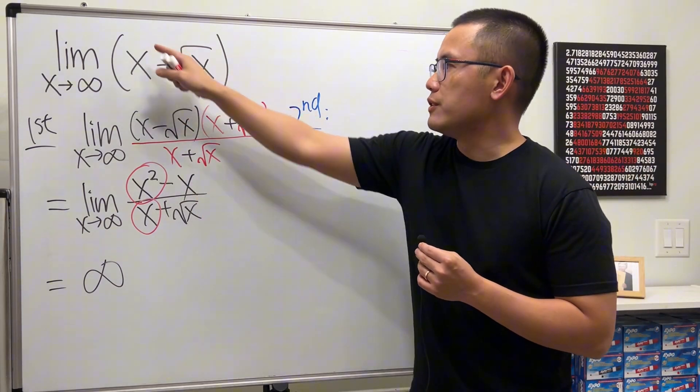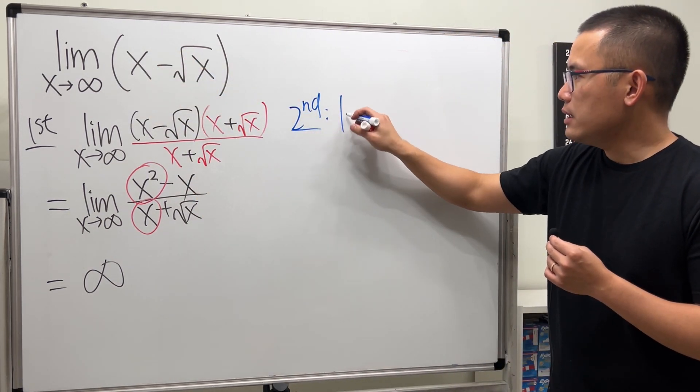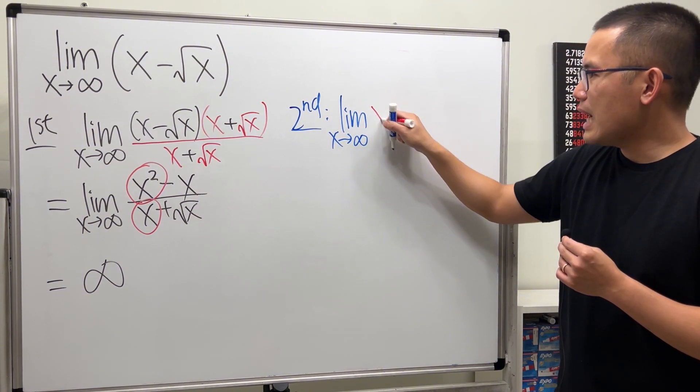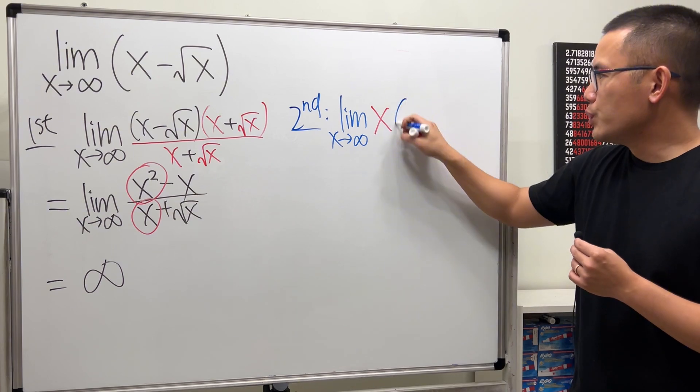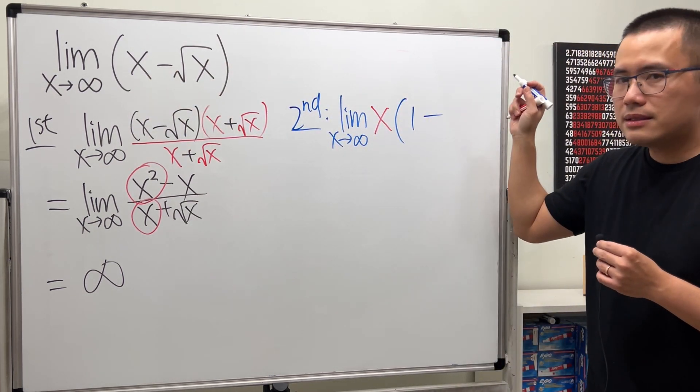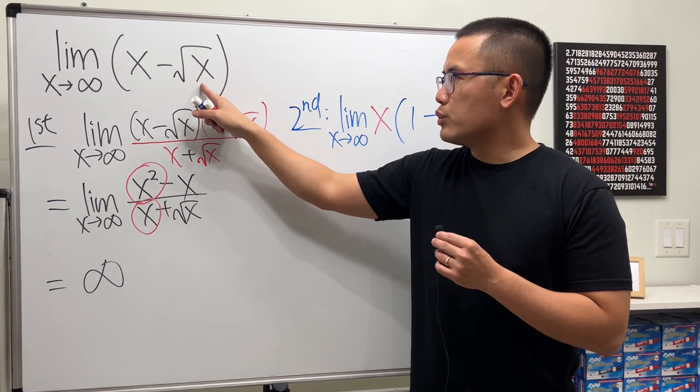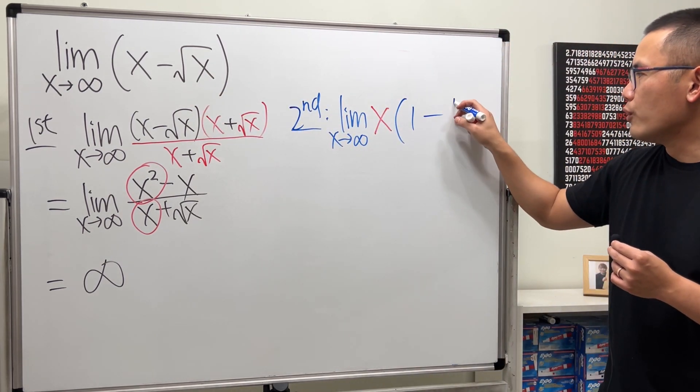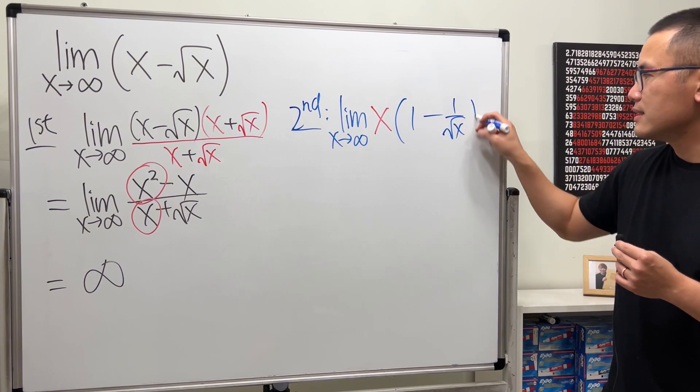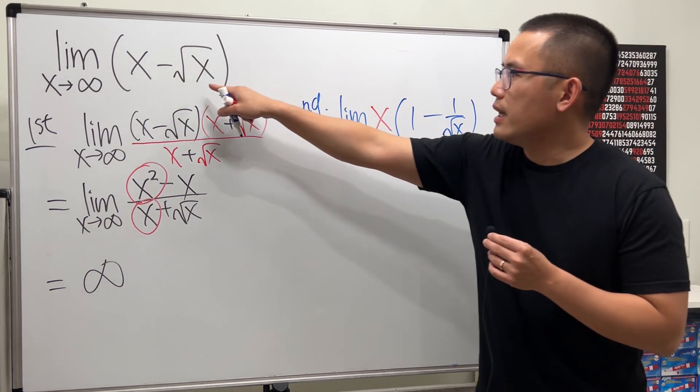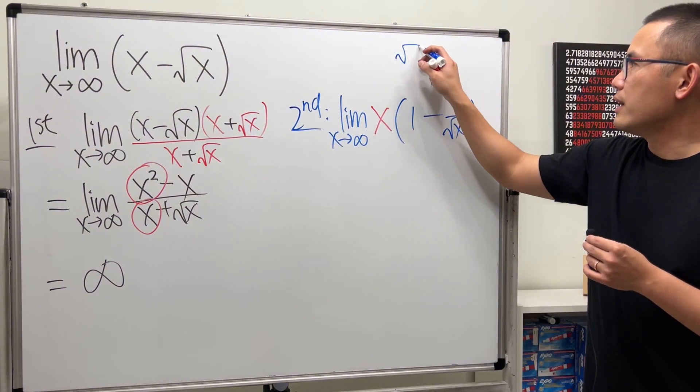We have x to the first power and this is x to the one half power. Factor out the bigger exponent which is x to the first. So we can say that's the limit as x approaching infinity, factoring out an x. Then we get this becomes 1 and then minus square root of x divided by x, so we get 1 over square root of x.